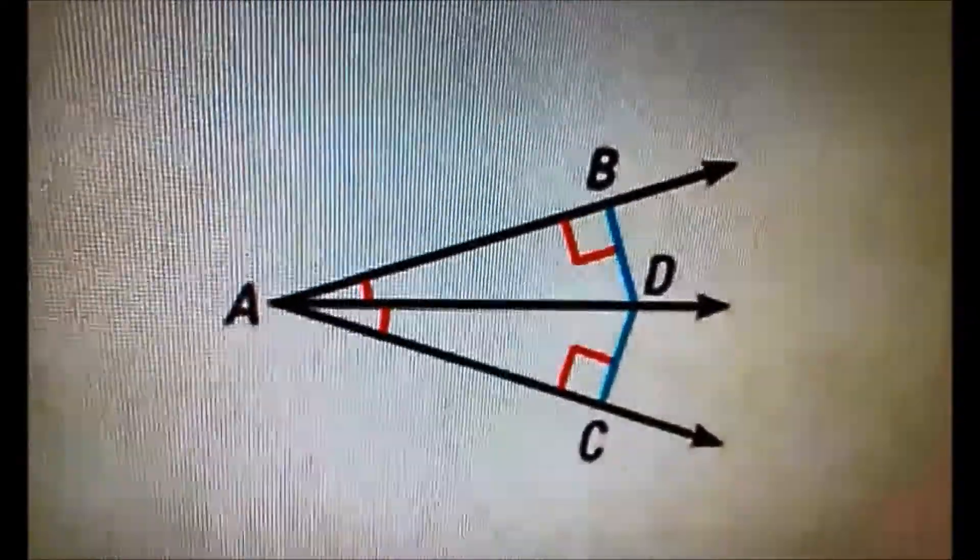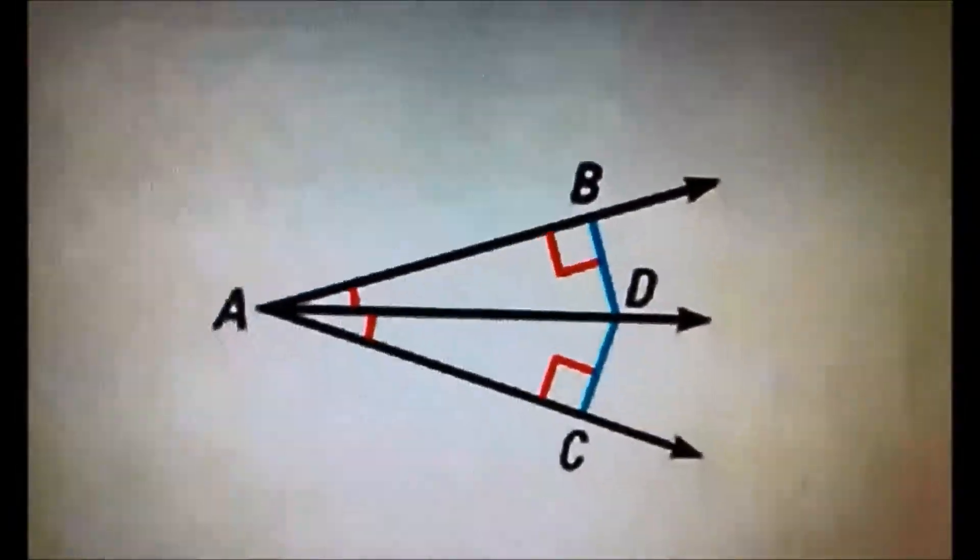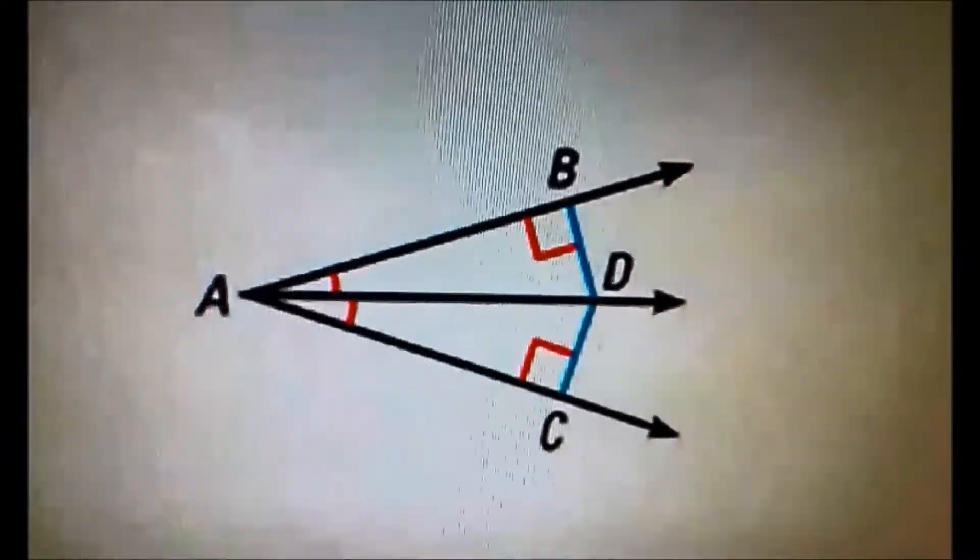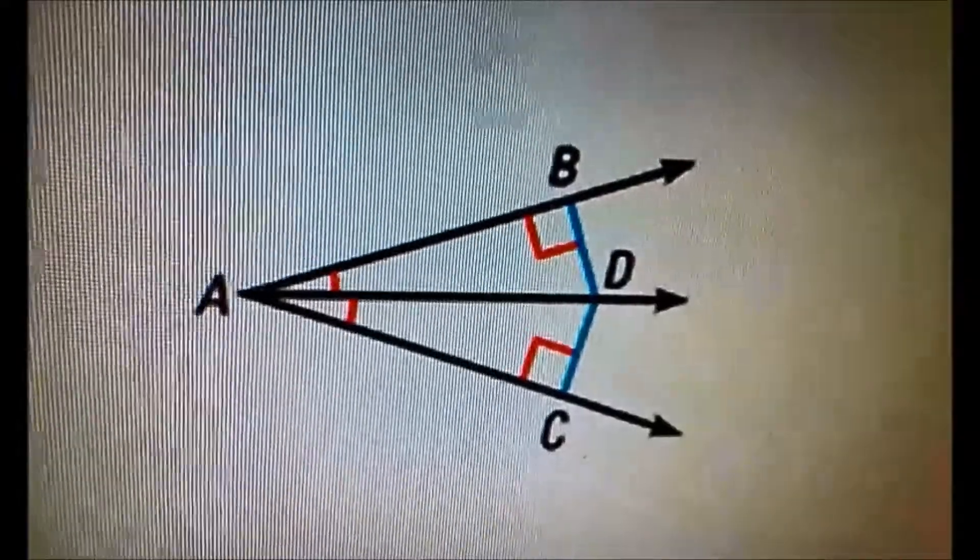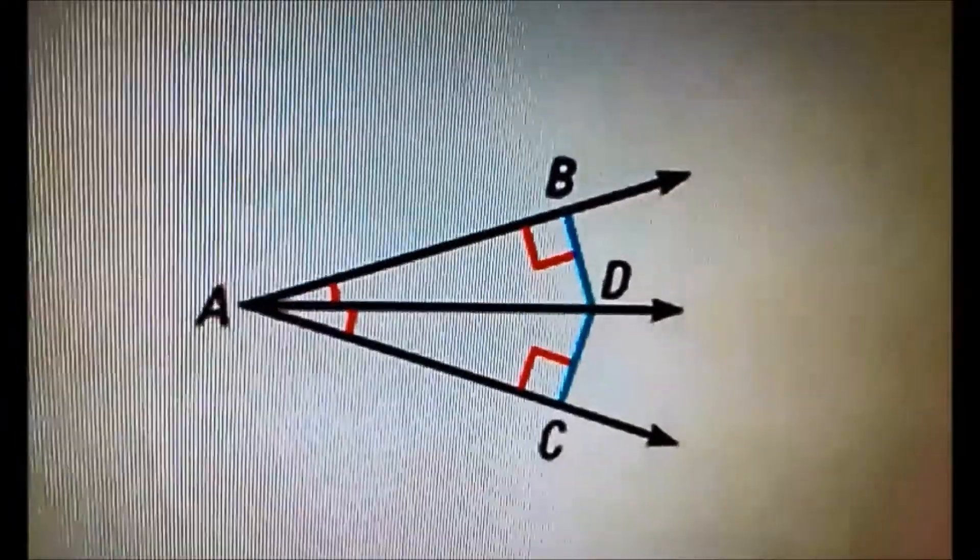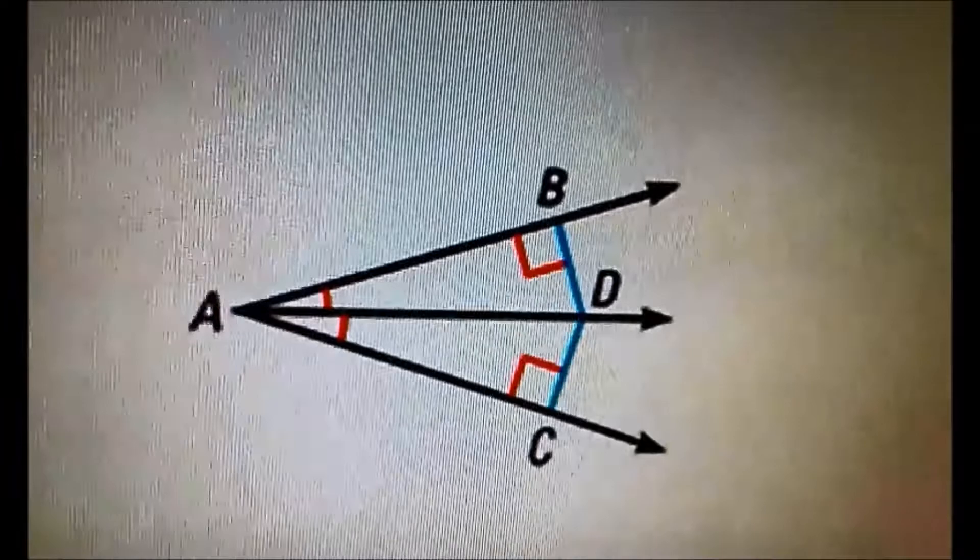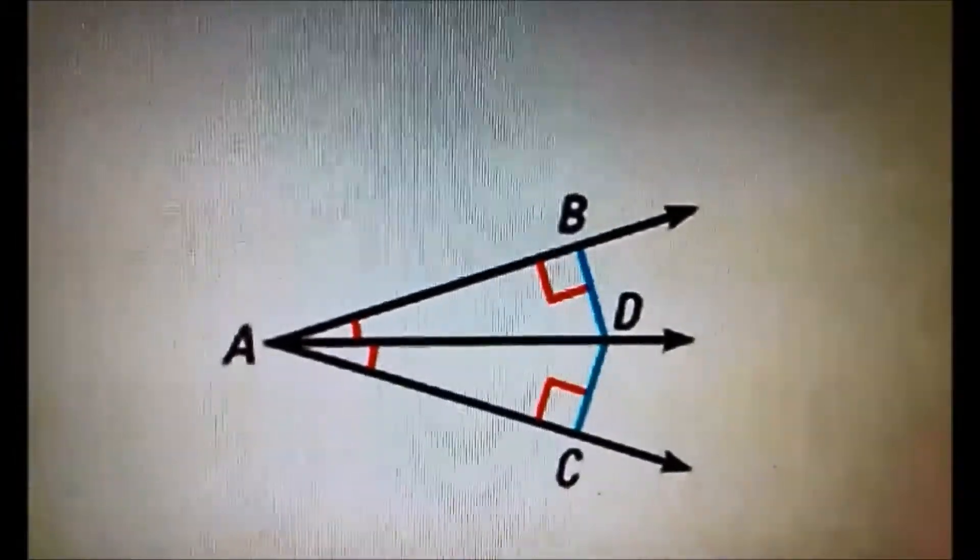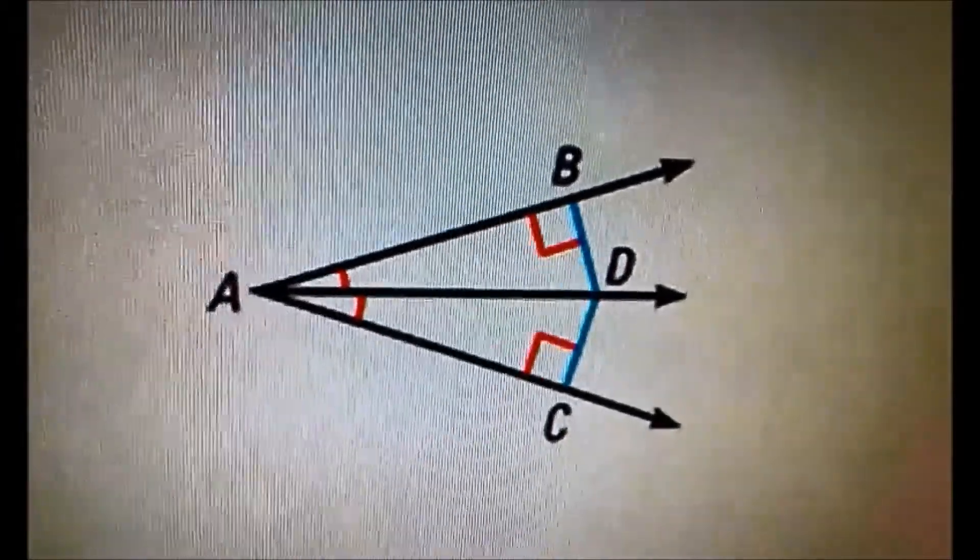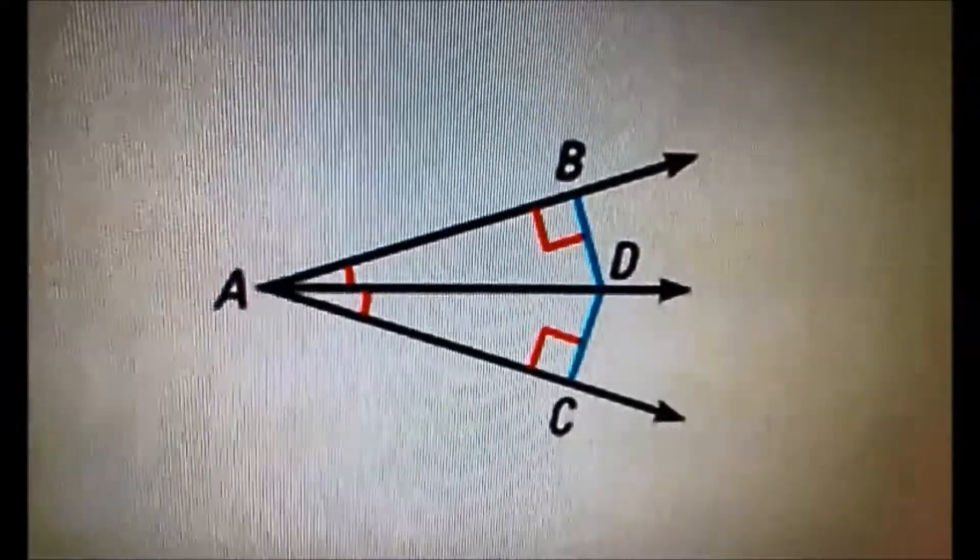Based on this example, we used theorem 5.5, angle bisector theorem. The angle bisector theorem is if a point is on a bisector of an angle, then it's equal distance from two sides of the angle. Based on this example, if line AD bisects angle BAC, and DB is perpendicular to AB, and DC is perpendicular to AC, then DB equals DC.